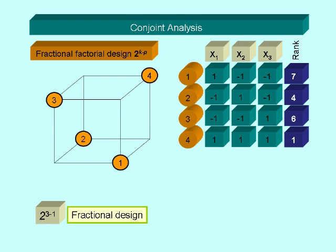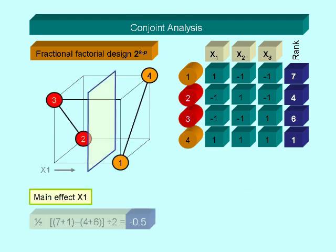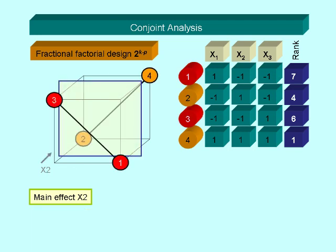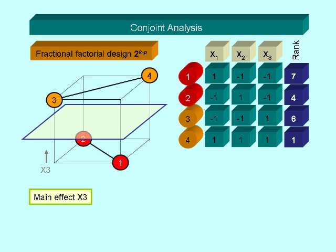So finding the part-worth utilities, we use only 2 of the 4 combinations to build the average in each dimension, and we come to the same result as for the full factorial design.